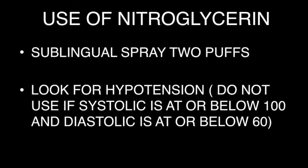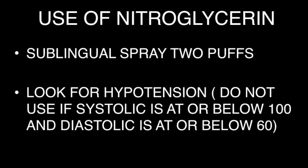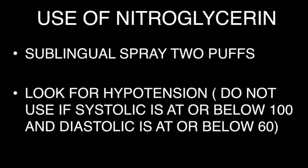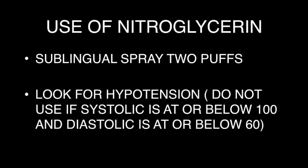Use of nitroglycerin is very important. It has a vasodilator effect and hence achieves better filling of the coronary arteries. A sublingual spray of two puffs can be given normally just after the topogram and before starting the calcium score. It leads to a mild transient rise in heart rate, so giving it before the calcium score allows the heart rate to settle by the time we acquire the contrast-enhanced phase. It is important to check the BP before using the NTG spray; it should not be used when systolic pressure is below 100 or diastolic is below 60.